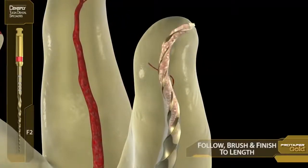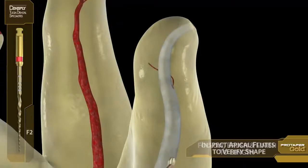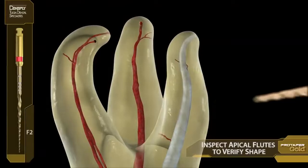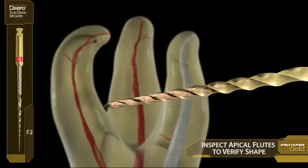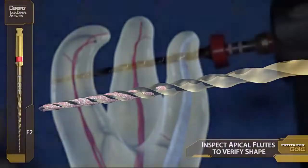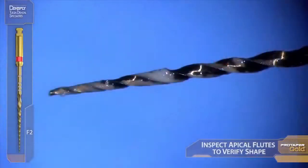These instruments are designed to follow one another. Notice the flutes are now filled with dentin. In animation, we can see that that shape would exist and does exist. And clinically on the actual file itself, we can see the same validation — we have verified the shape.